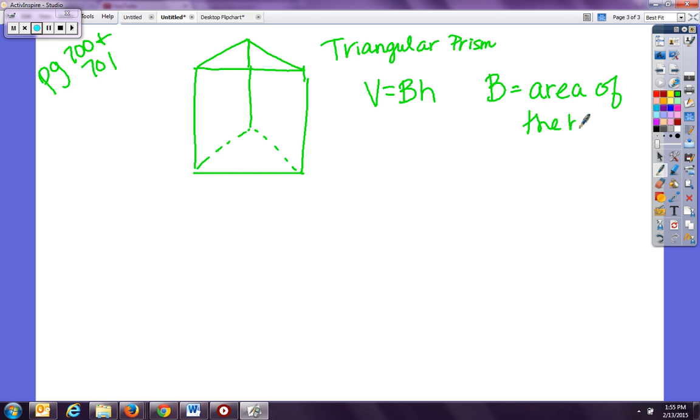Now we know that triangles have a different formula for area than length times width times height because they don't have the same type of shape. So we need to figure out how do we find the area of a triangle. Well, the area of a triangle equals one half base times height.